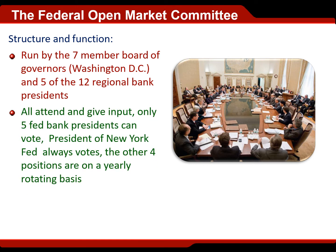All 12 bank presidents get to attend an FOMC meeting. The picture shown here is an FOMC meeting where they're all sitting around in Washington, DC, talking about the goals of the Fed and what's going on in the US economy and what they can do to keep the economy on track. But of all 12 presidents, only five get to vote. The one that always gets to vote is the president of the New York Fed, and the other four positions rotate on a yearly basis.